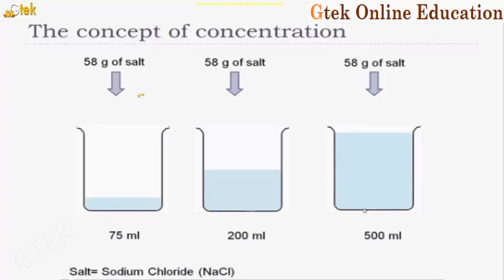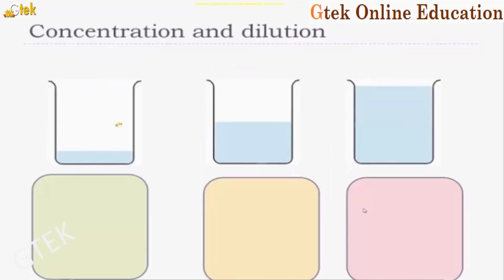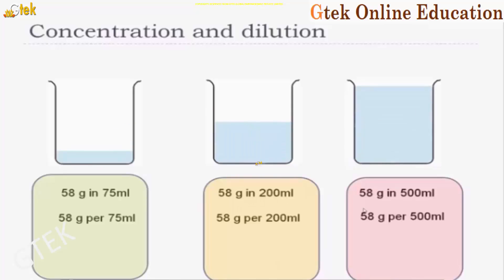Now we are looking at moles in solution. You can see 58 grams of salt — sodium chloride — dissolved in 75 ml of water, and separately in 200 ml and 500 ml of water. The 58 grams in 75 ml will have more concentration of salt when compared to 58 grams in 200 ml and 58 grams in 500 ml.